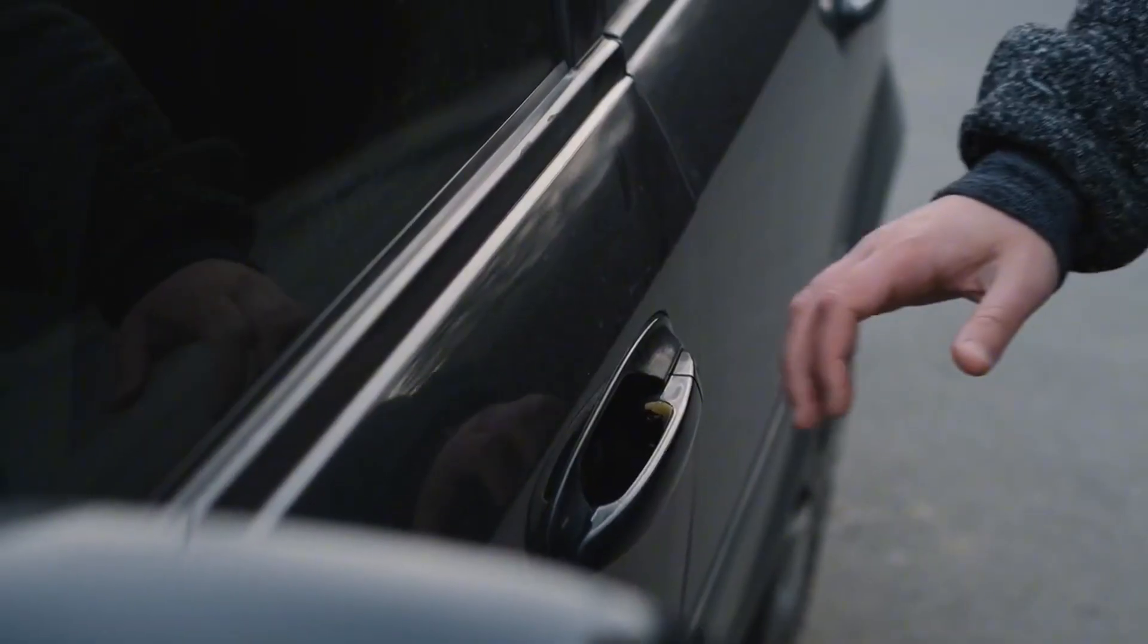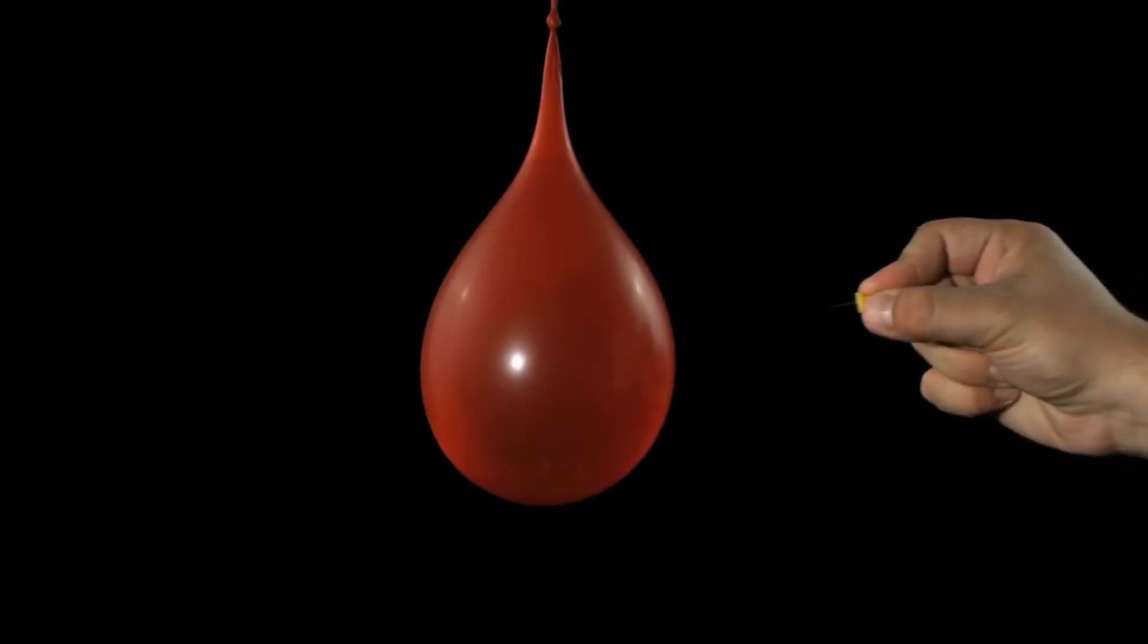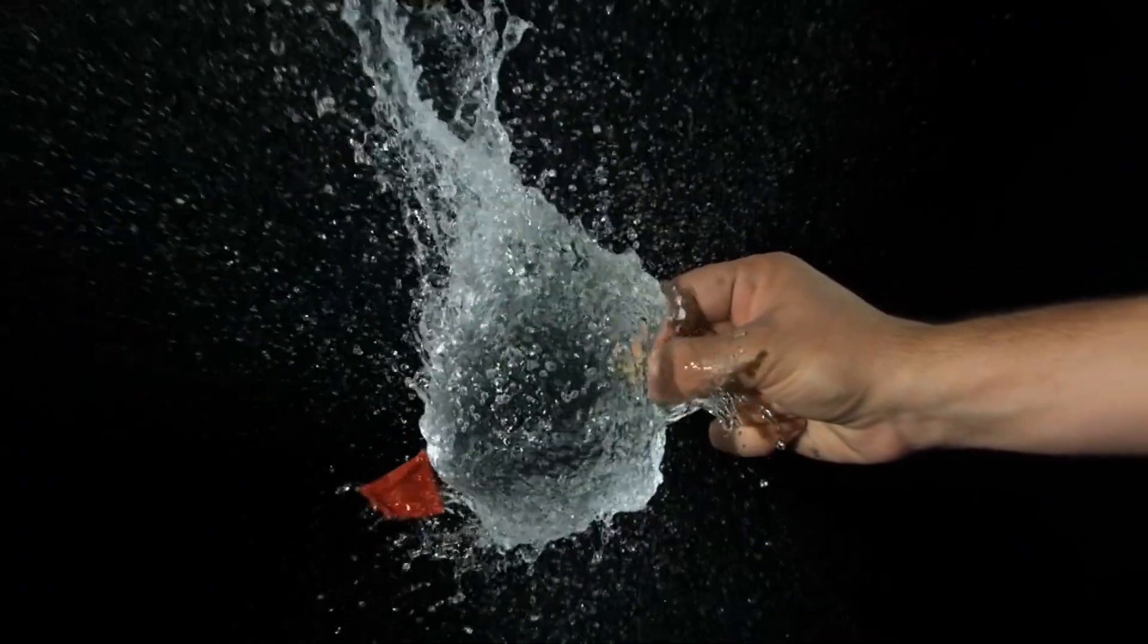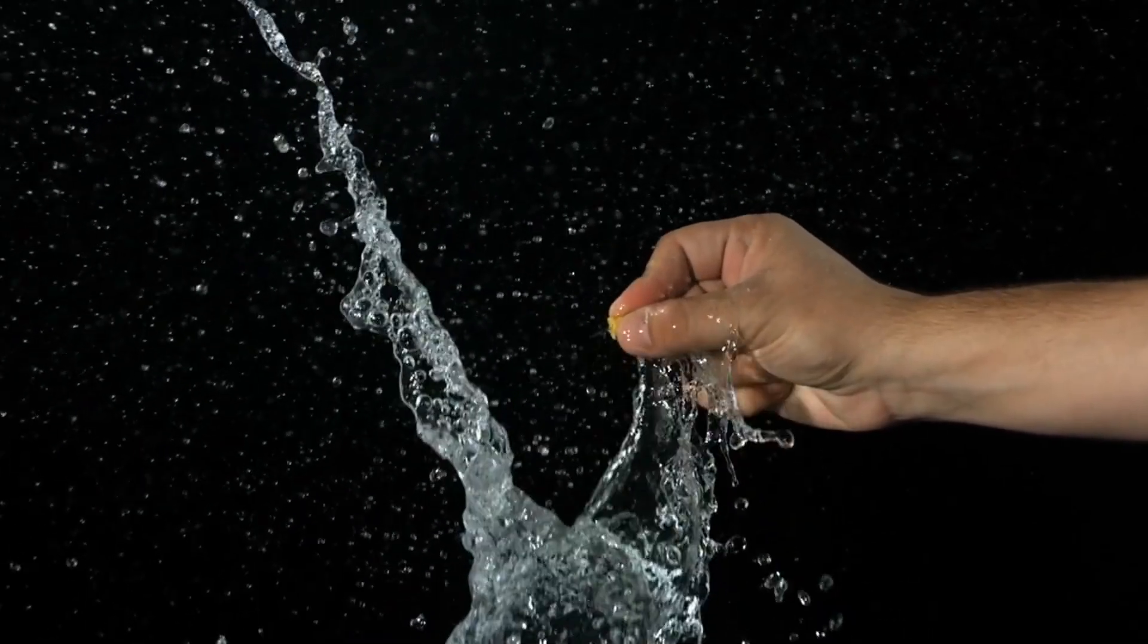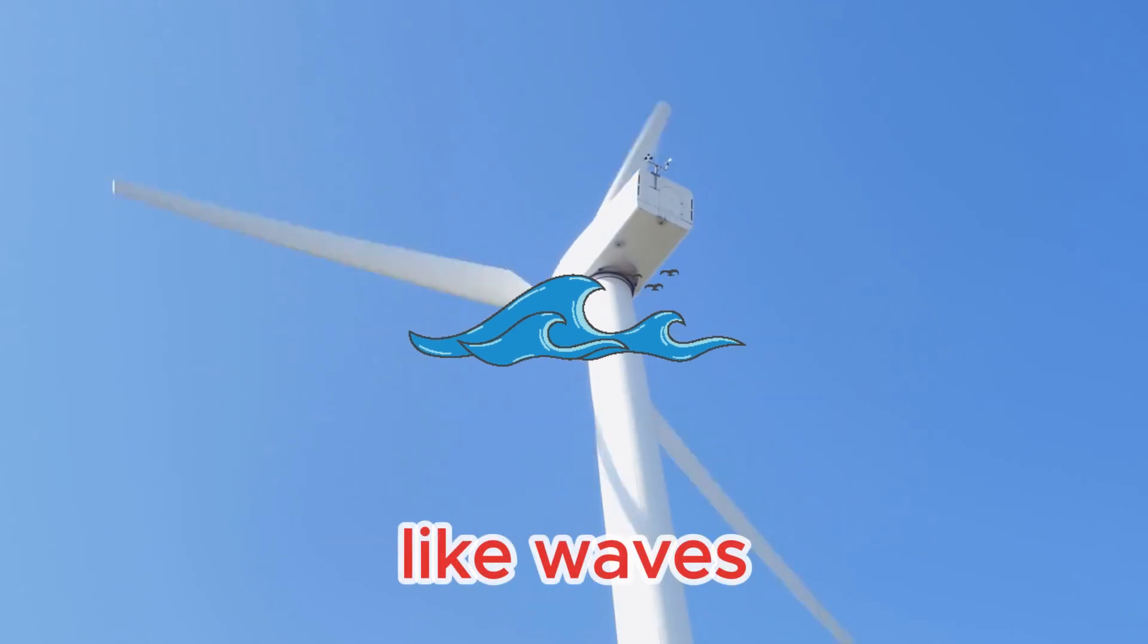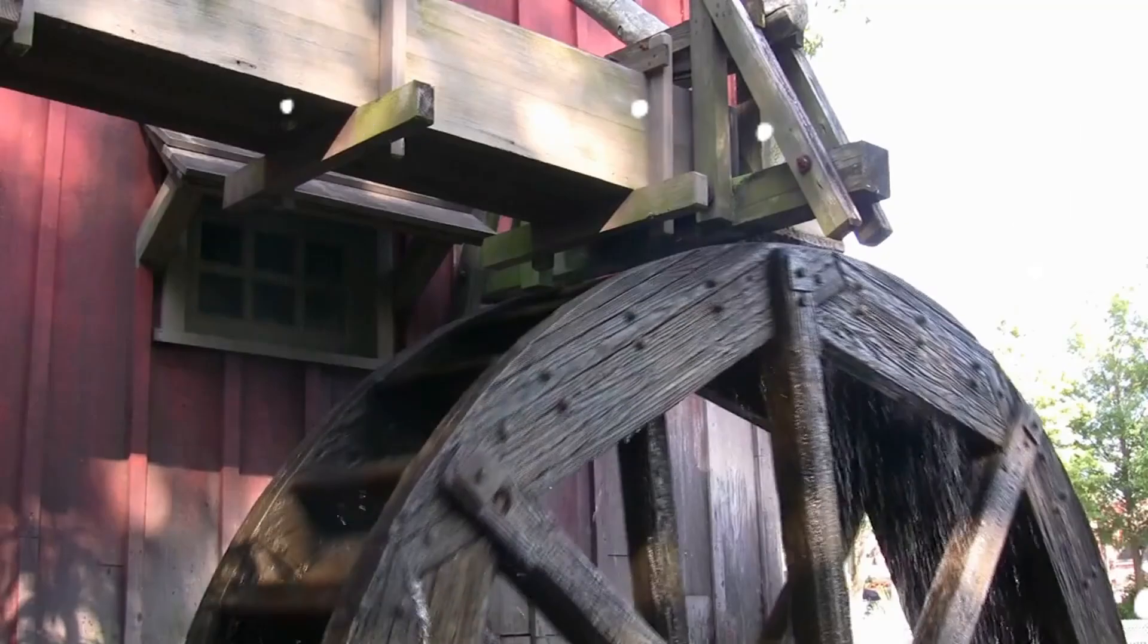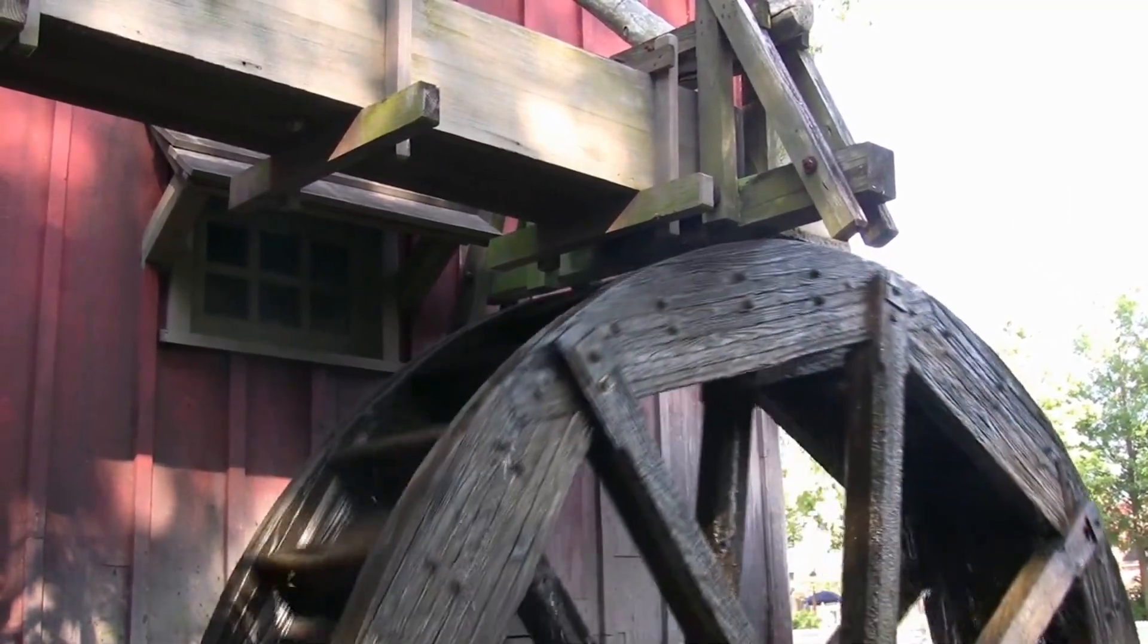This is the same principle behind the static shock you get when touching a doorknob after walking on carpet. Some researchers have taken this concept to the extreme, building devices that can generate electricity from popping balloons or rubbing surfaces together. These generators can even harness energy from everyday activities like waves crashing on the shore or the wind rustling leaves. It's a bizarre but promising way to make power from simple movements and friction.